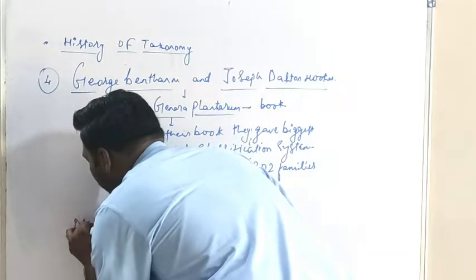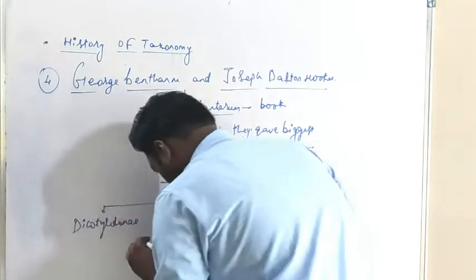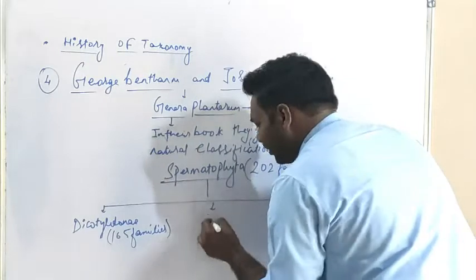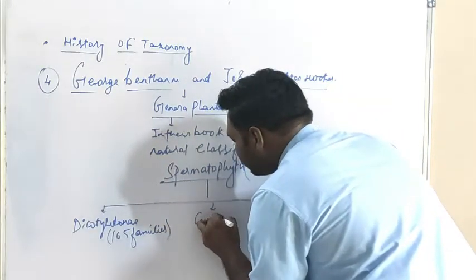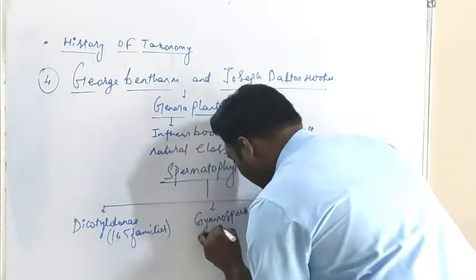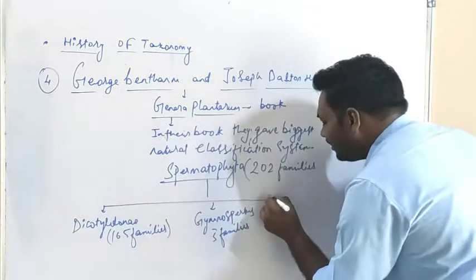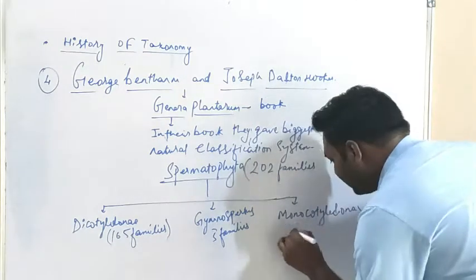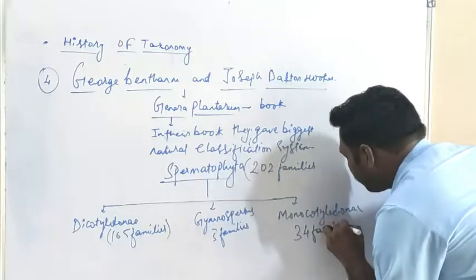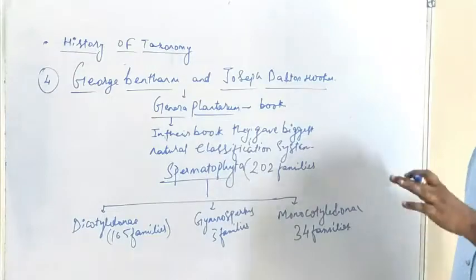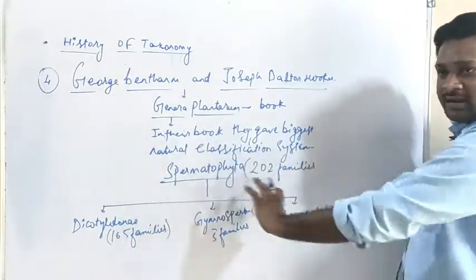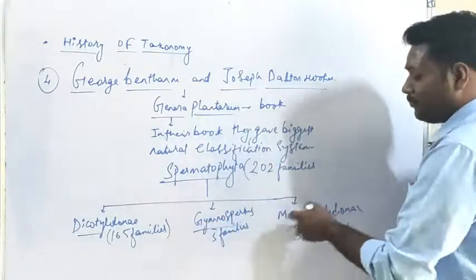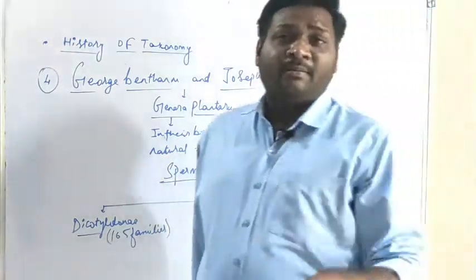The three divisions of Spermatophyta are: Dicotyledonae with 165 families, Gymnosperms with 3 families, and Monocotyledonae with 34 families — totaling 202 families. This classification has certain merits and demerits which we will discuss now.